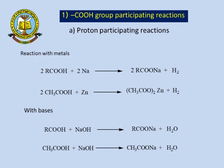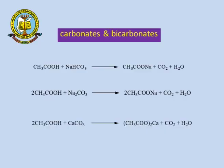Treatment with bases: RCOOH treated with sodium hydroxide (a base) gives the sodium salt of the carboxylic acid and water as byproduct. Taking methyl as R gives sodium acetate. Reaction with carbonates and bicarbonates: treating carboxylic acid with NaHCO₃ gives the sodium salt, CO₂ gas, and water. Treating with sodium carbonate gives the sodium salt of carboxylic acid, CO₂, and water. Treating with calcium carbonate gives calcium acetate, CO₂, and water.